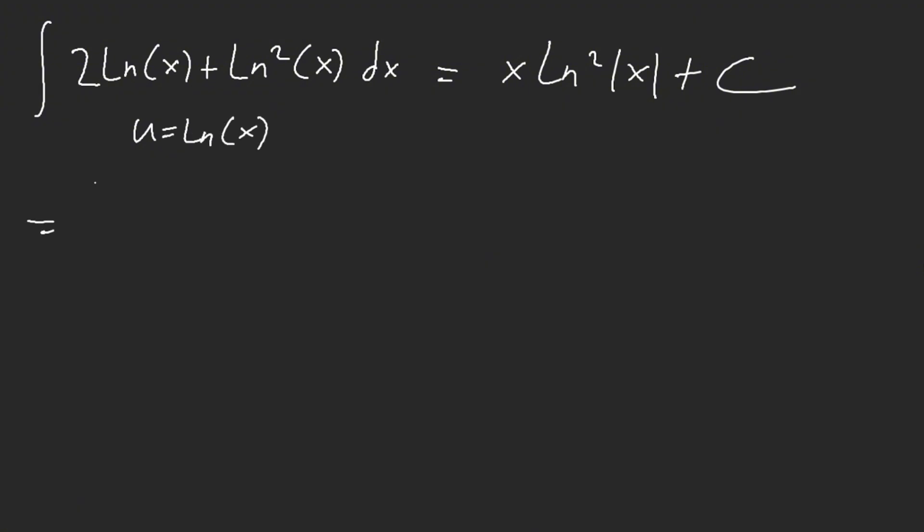What this does is this will give you e to the u times 2u plus u square, and now you can easily see, oh, this is a reverse product rule of u square e to the u, which then we change it back to u equal ln of x. This is exactly what this answer is.